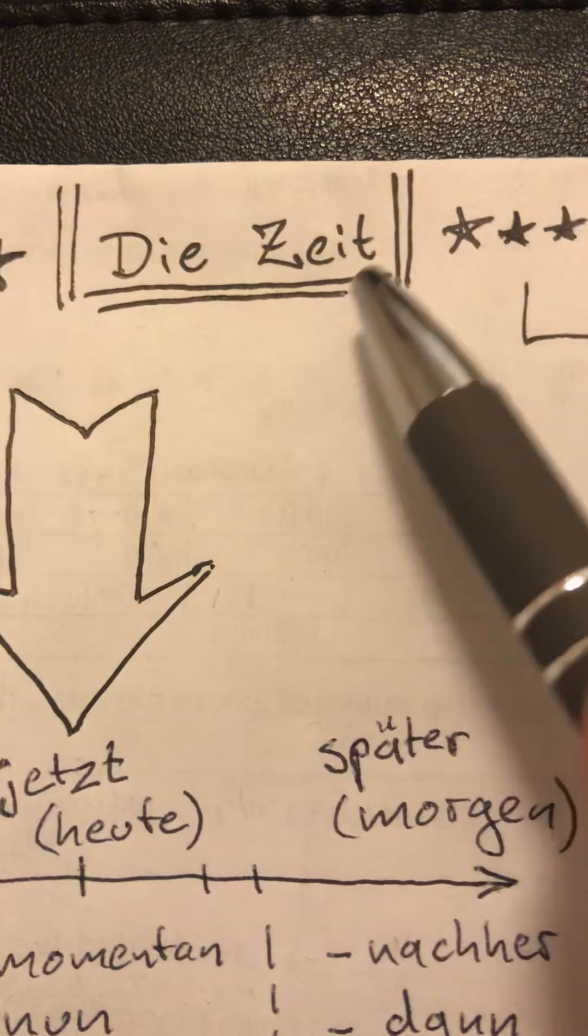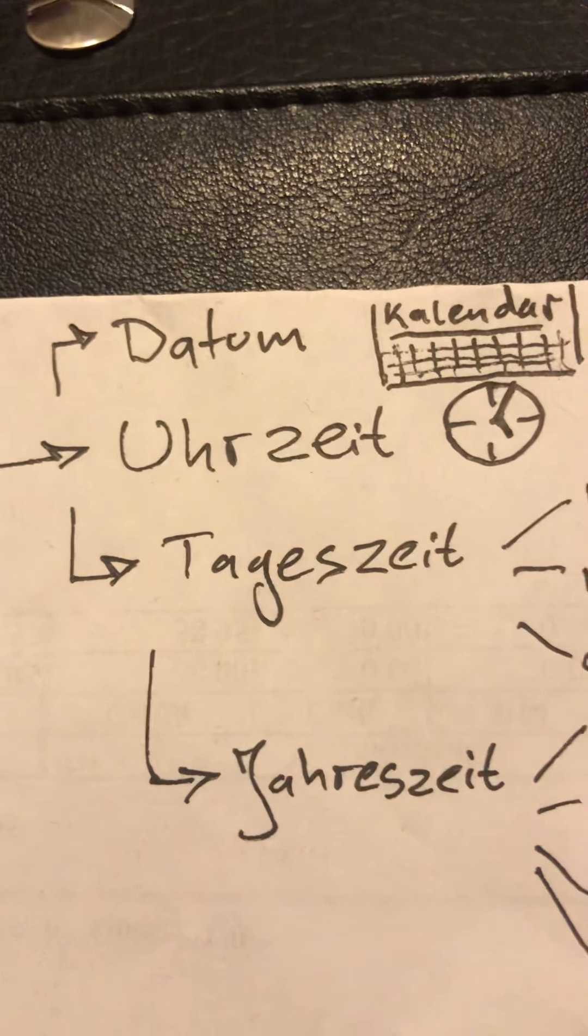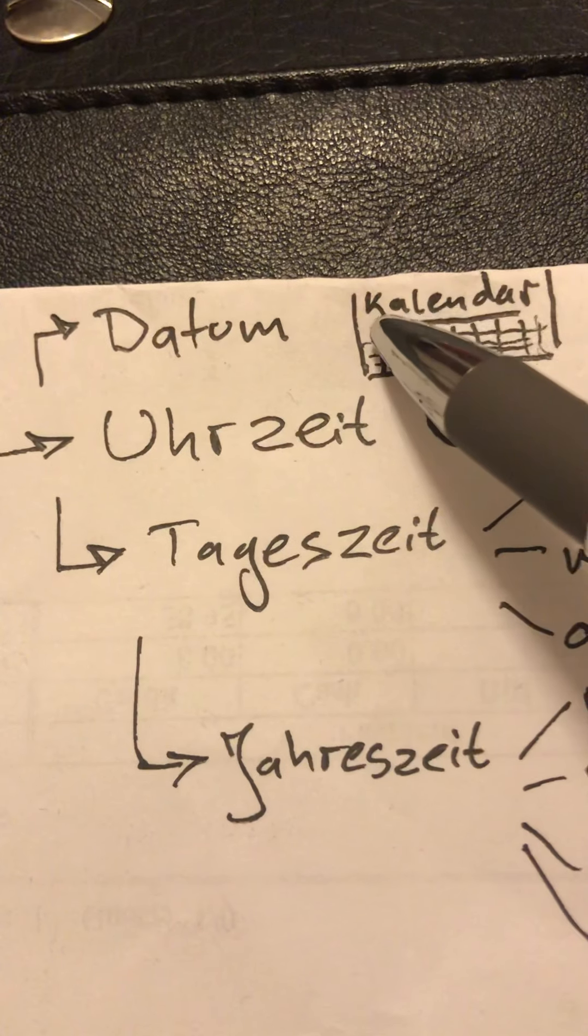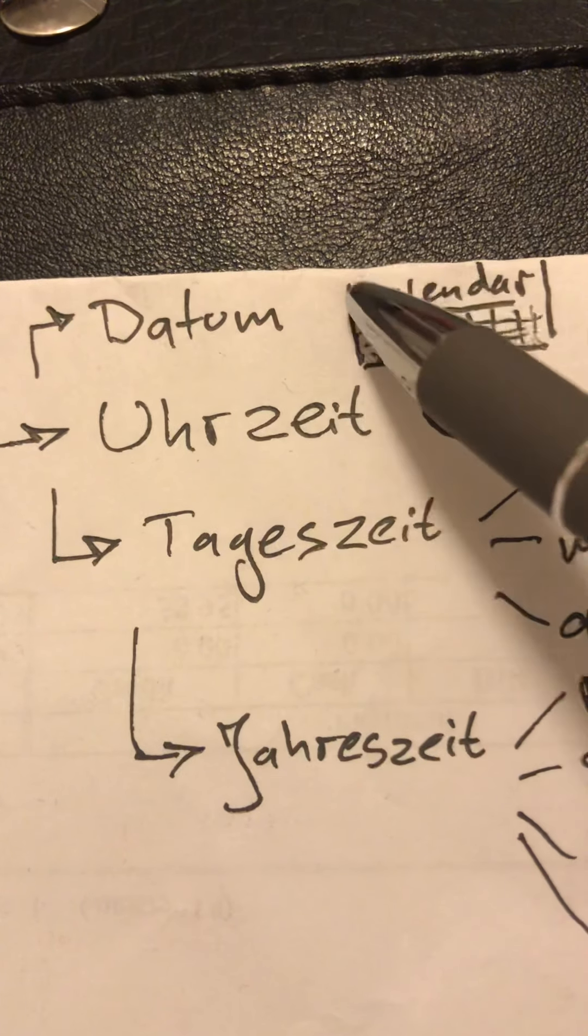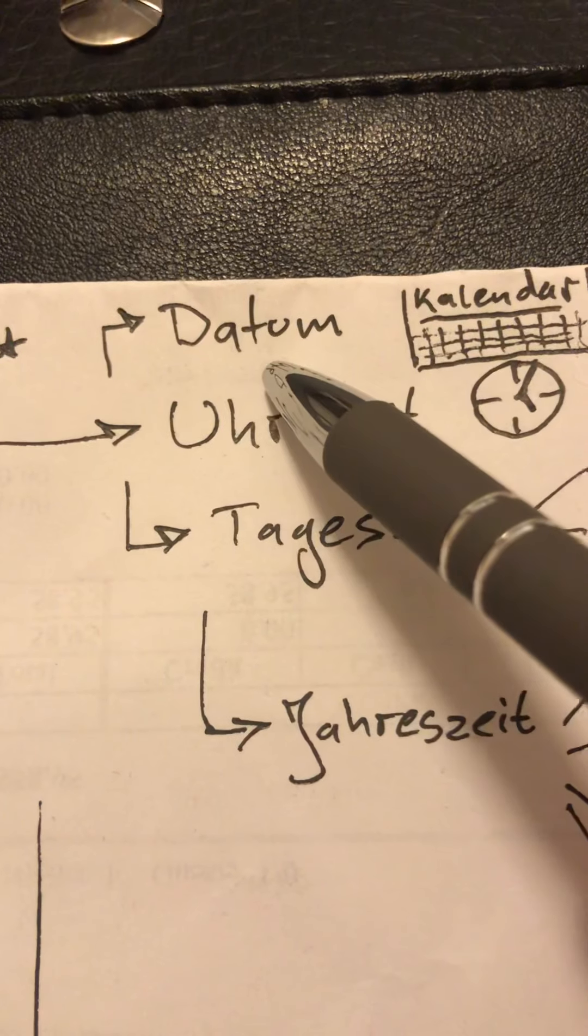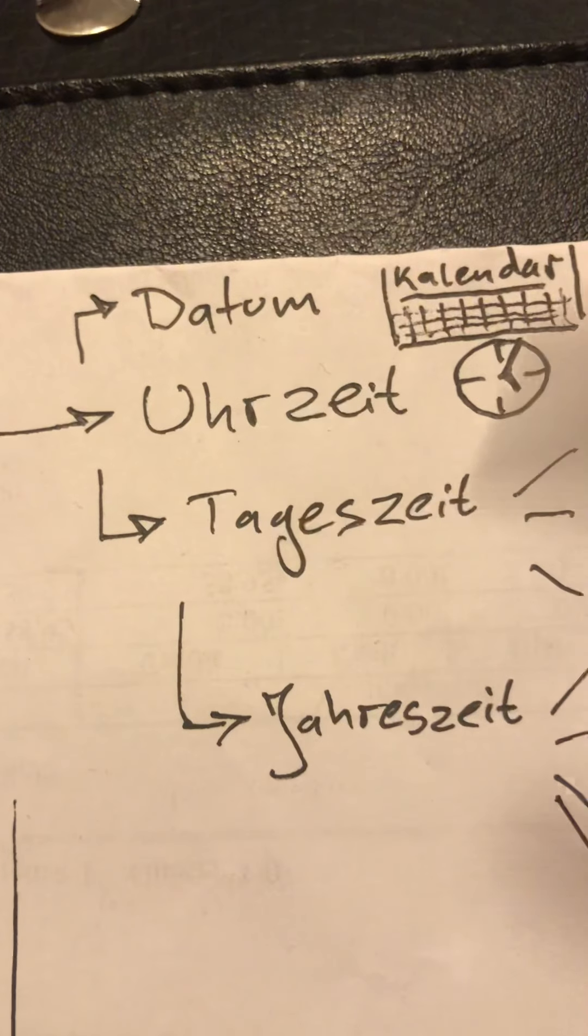Die Zeit - Time. So we learned Datum, a date, not like a date where you meet someone that you're interested in but the date on a calendar. Notice der Kalender mit einem großen K auf Deutsch. Ein Treffen would be a meeting, oder eine Vereinbarung would be a date, eine Verabredung.